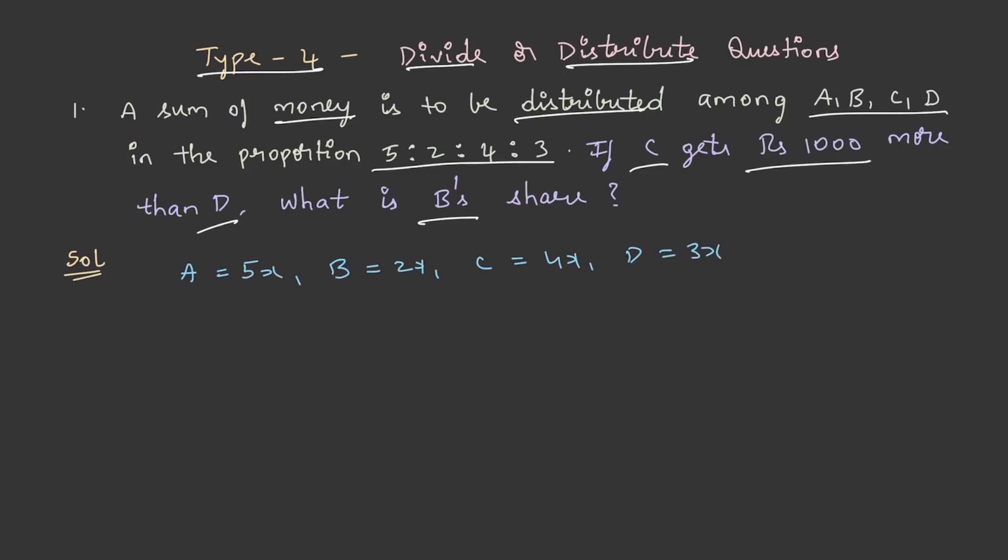And in the second statement it is given as C gets rupees thousand more than D. So C is getting thousand rupees more than D. Therefore, from this 4x is equal to 3x plus 1000, 4x minus 3x is equal to 1000 and from this x is equal to 1000. So this is the value of x.